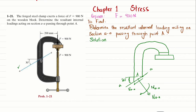You can see that this clamp exerts a force of 900 N on this wooden block. As a result, the wooden block will exert 900 N force in the upward direction on this clamp. Also, the distance between point A and the application of this force is 200 mm.